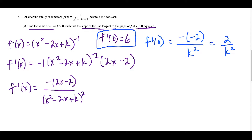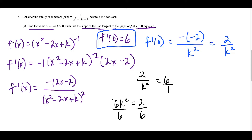So that minus minus 2, we could change to a positive 2 over k squared. We have that f prime of 0 is equal to 2 over k squared, but we also have that f prime of 0 is equal to 6. So we could set 2 over k squared equal to 6 and solve. Cross multiplying, we'll have 6 times k squared is equal to 2, then divide both sides by 6. So k squared is equal to a third, and taking the square root of both sides — since k is greater than 0 — k is equal to positive square root of 1 over 3, or 1 over the square root of 3.